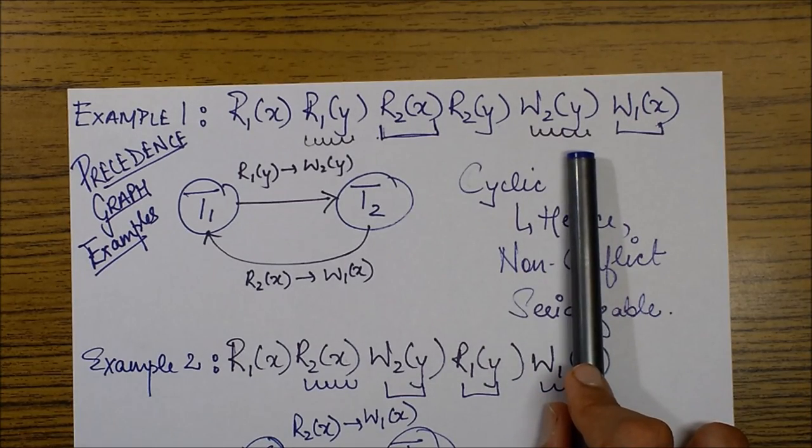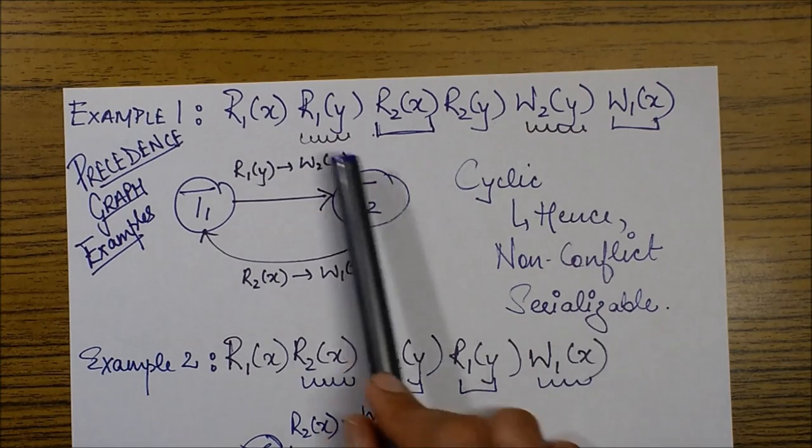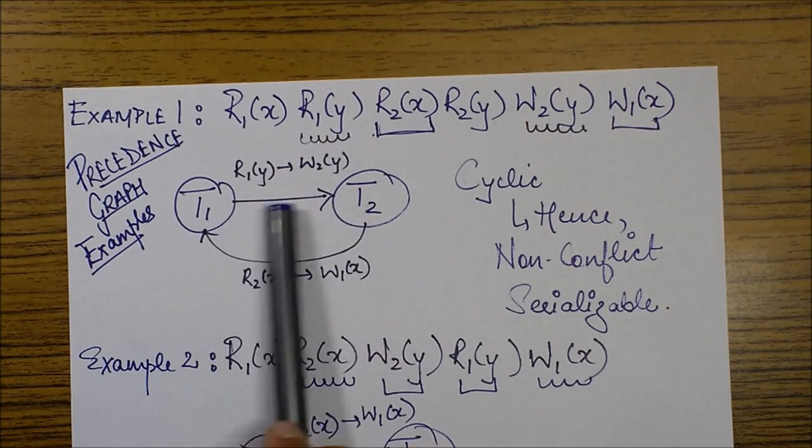So this is a conflict pair. Now what we will be doing? We will be drawing the edge corresponding to this conflict pair. So the edge will go from T1 to T2. So this is the edge corresponding to it.